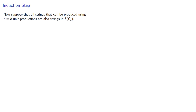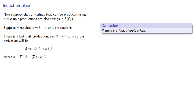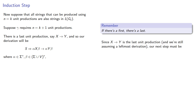So now let's find our induction step. Suppose that all strings that can be produced using n equals k unit productions are also strings in L(G1). Now suppose gamma requires k plus 1 unit productions. If there's a first, there's a last, and so there's a last unit production, say X produces Y. So our derivation will look something along the lines of S produces alpha, X, beta, and X produces alpha, Y, beta. Where alpha is a string of terminals, and beta is a string of terminals and variables. Since X produces Y is the last unit production, and we're still assuming a leftmost derivation, our next step must be Y produces delta, where delta is some string of terminal symbols and variables.